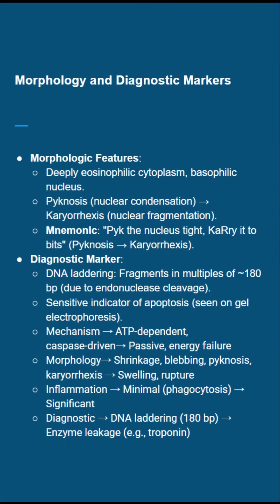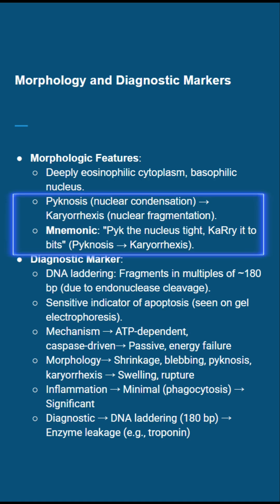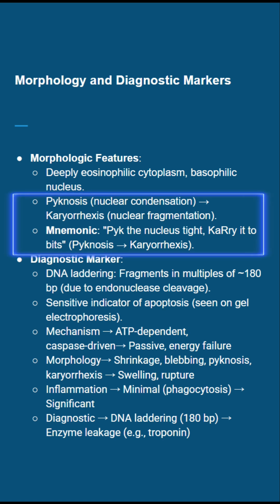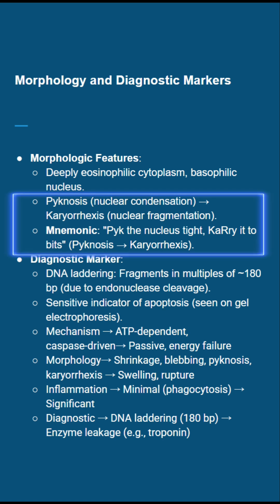Now let's move to the morphology and diagnostics — this is what you'll see on histo slides. Apoptotic cells have deeply eosinophilic cytoplasm and a basophilic nucleus. The nucleus goes through pyknosis, condensing into a tight dark blob, then karyorrhexis, fragmenting into bits. Use this mnemonic to nail it: 'Pyknosis — nucleus tight; karyorrhexis — carry it to bits.'